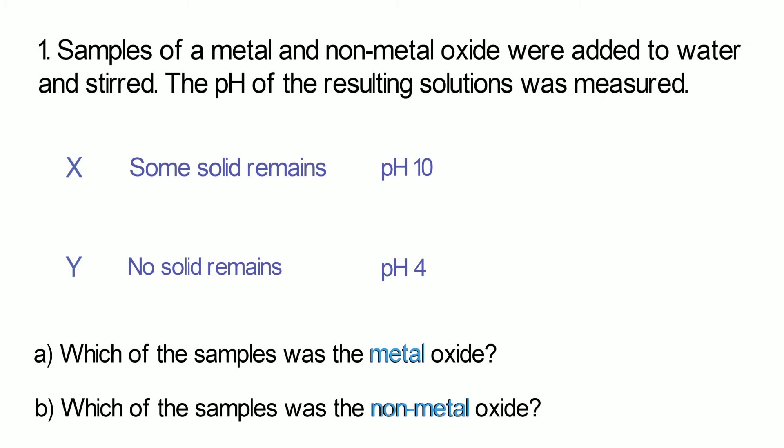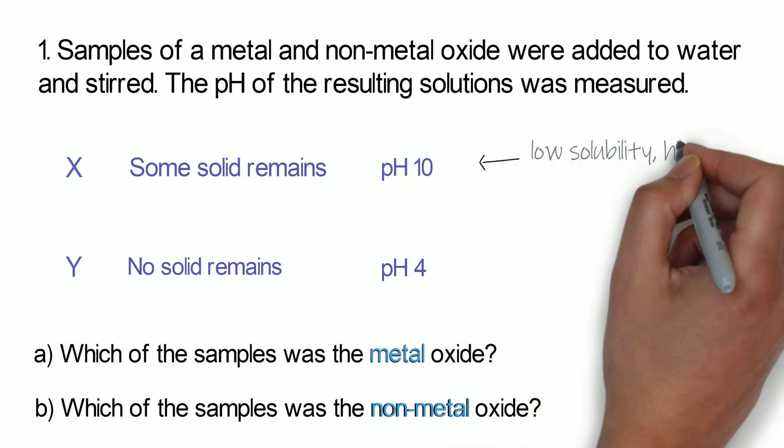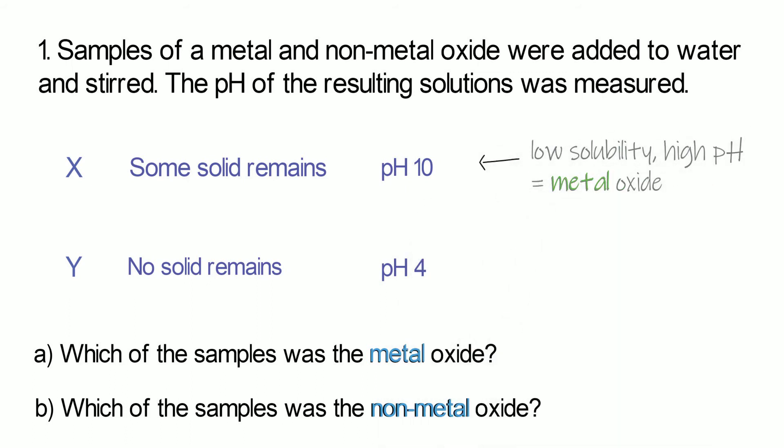If we go back to our data we can see that X has some solid left, so it's not got a very high solubility. It's got quite a low solubility. And also the solution that's formed has a pH of 10, so it's got a high pH. That means that X is probably going to be the metal oxide.